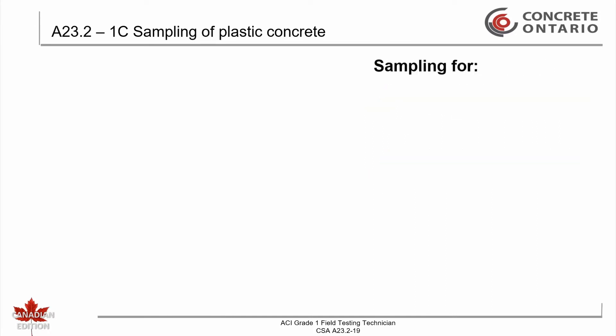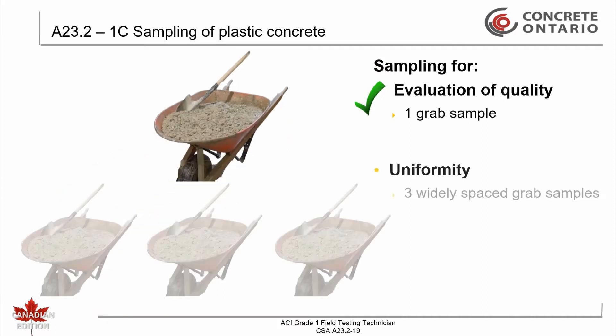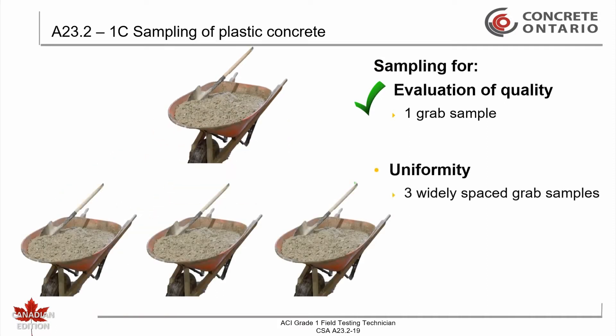When sampling for evaluation of the concrete quality, obtain a grab sample at one point of discharge in as short a period of time as possible. When sampling for uniformity, obtain three grab samples from widely separated portions of the batch, keeping the samples separate to represent the different portions of the batch.